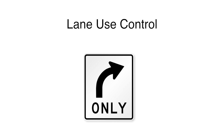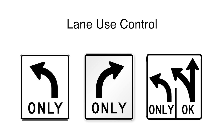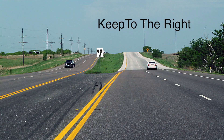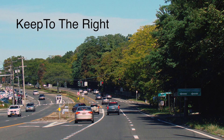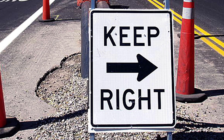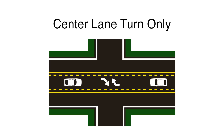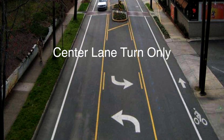Lane use control: These signs are used where turns are required or permitted from lanes as shown. Keep right: A traffic island, median, or obstruction divides the road ahead — keep to the right. Center lane turn only: Driver must share the center lane for left turns from both directions.